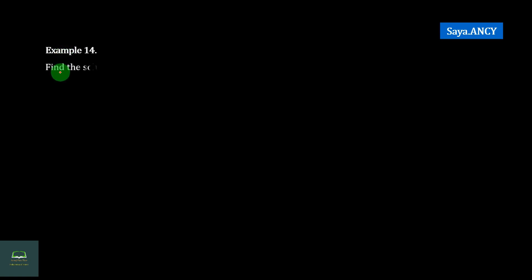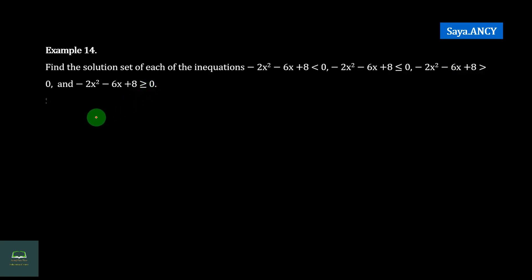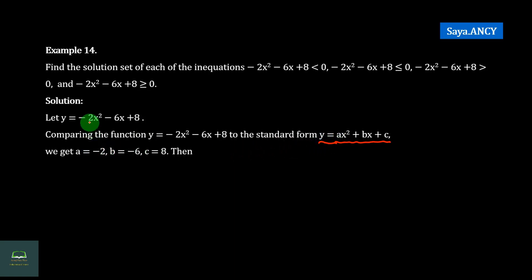Example 14: Find the solution of each of the equations. Minus 2h squared minus 6h plus h less than 0, less than or equal to 0, greater than 0, greater than or equal to 0. Minus 2h squared minus 6h squared plus h squared.